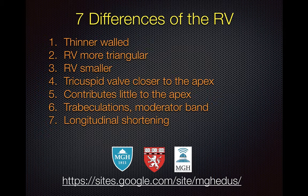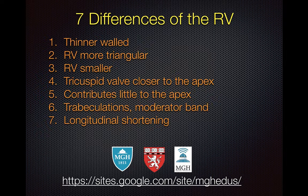So in summary, these are the seven major morphological differences of the RV. Compared to the left ventricle, the right ventricle is thinner-walled, more triangular in shape, it is smaller, and the tricuspid valve is located closer to the apex than the mitral valves. The right ventricle also contributes very little to forming the apex in the normal heart.